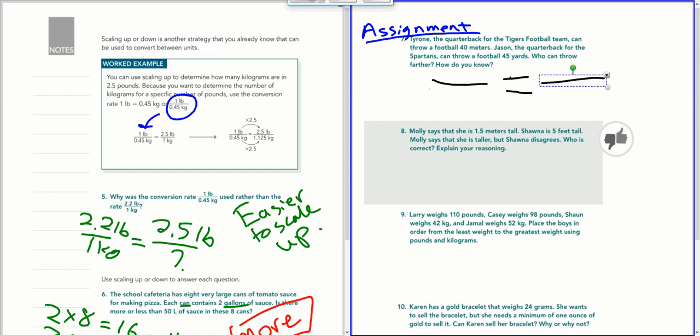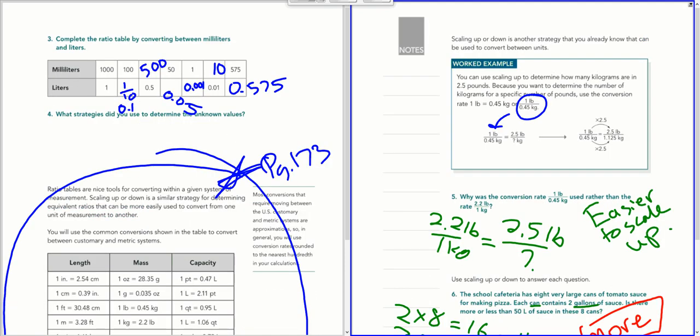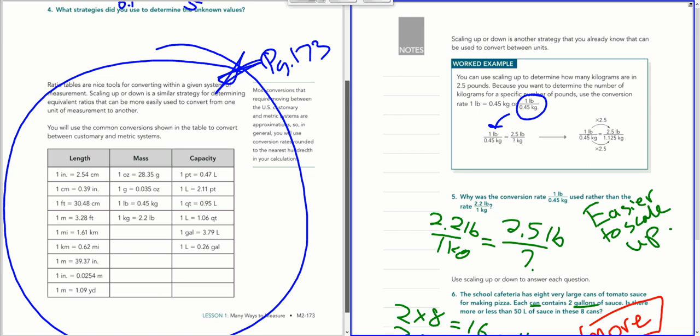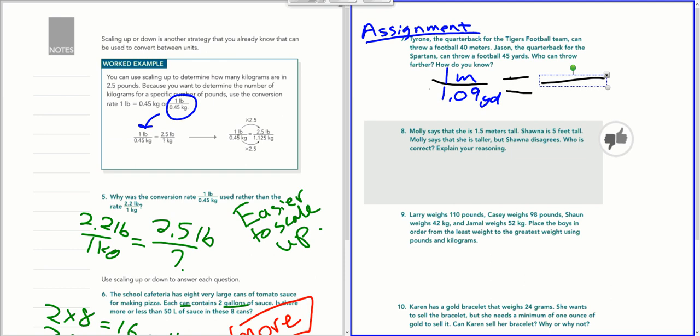So I got my proportion set up and I think it was 1 meter equals 1.09 yards. I'm just going to double check to make sure I'm right here. Yep. Now, I want my 40 meters to go right here. And so I need to scale up. One meter to get to 40 meters would be times 40. And then I'm going to do that down here times 40. So I need to figure out 1.09 times 40. And that's going to be my answer in yards.